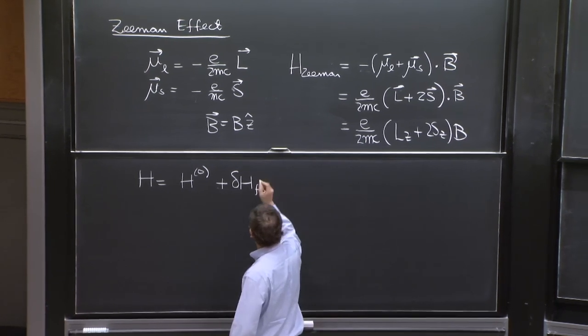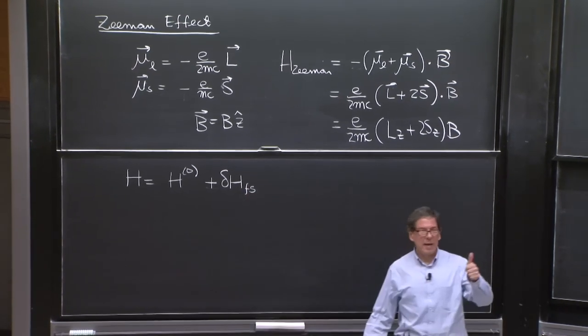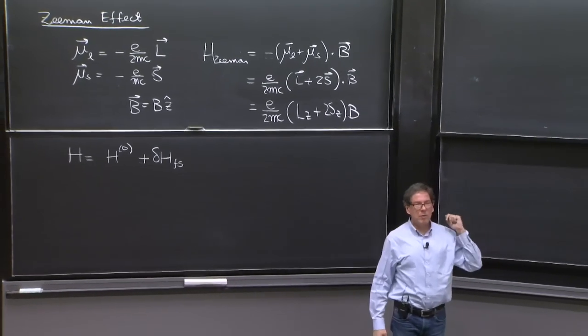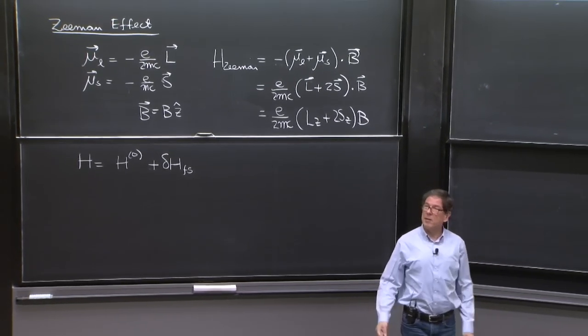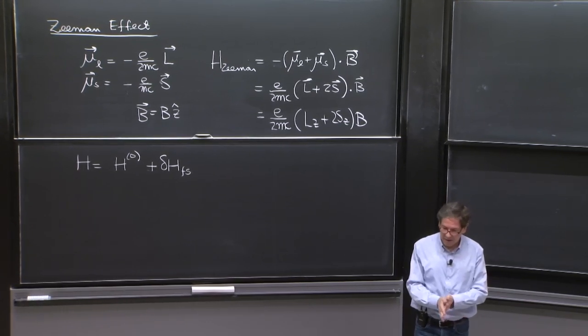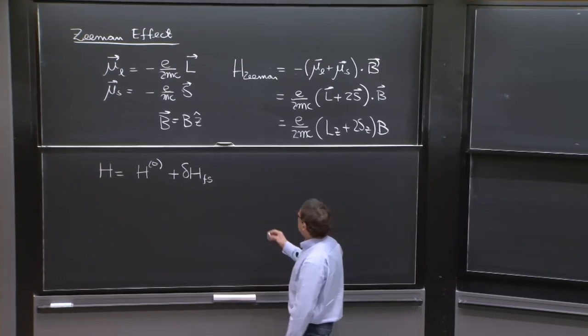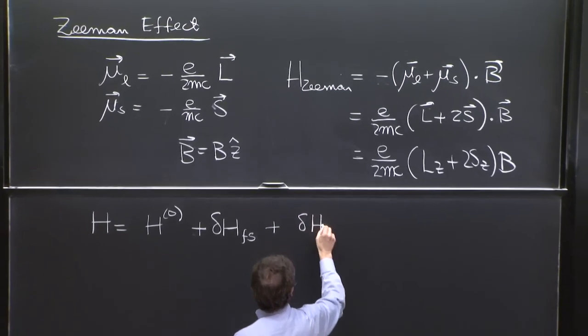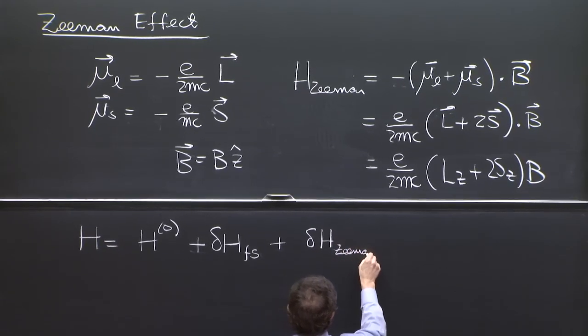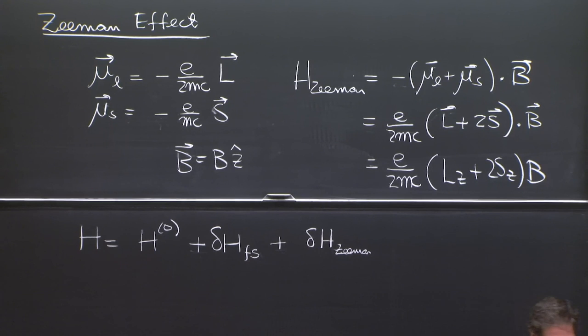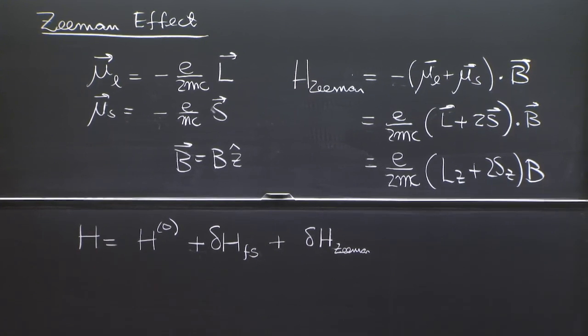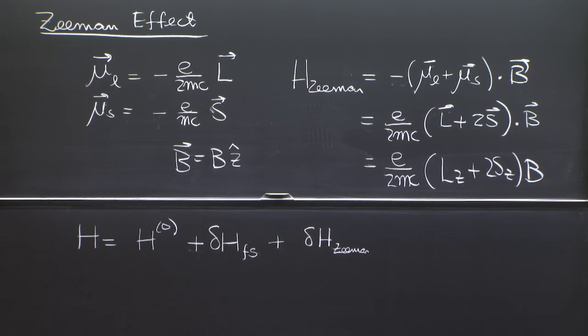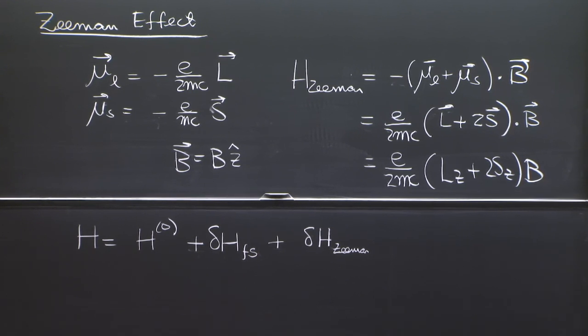Let's put FS for fine structure. Those were the relativistic terms, the Darwin term, and the spin orbit coupling. The three of them constituted what we call the fine structure Hamiltonian. And now we have a Zeeman effect. I probably should call it delta H Zeeman, because it's an addition here to the term we had before. But in the context of the hydrogen atom, we should call it delta H Zeeman. And now we have to rethink.